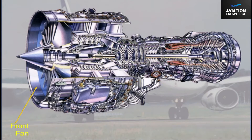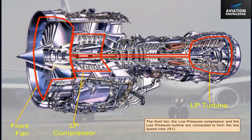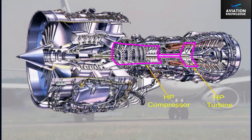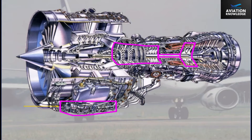The front fan, the low-pressure compressor, and the low-pressure turbine are connected to form the low-speed rotor N1. The high-pressure compressor and the high-pressure turbine are connected to form the high-speed rotor N2. The accessory gearbox is located at the bottom of the fan case and is driven by the high-pressure rotor.